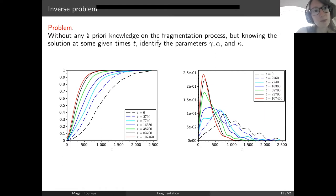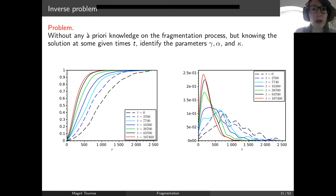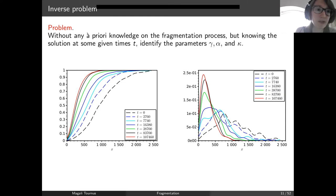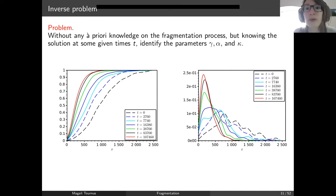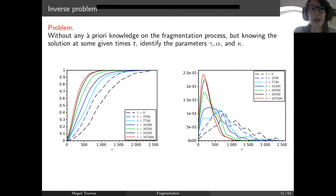What is the problem we are facing? The generic problem is: we don't know anything about the fragmentation process — we don't know the physics. But we have the distribution f at some time t. Can we recover the parameters gamma, alpha, and kappa?